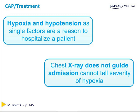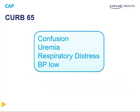Any combination of these criteria should result in hospitalization. However, if hypoxia or hypotension are present, even as single factors, they are enough to admit the patient. Remember, the chest x-ray does not guide admission because it cannot tell the severity of hypoxia. Another tool you can use is the CURB65 rule: C for confusion, U for uremia, R for respiratory distress, B for BP low, and 65 for age 65. If the patient has any one of those four criteria, or has an age of 65 or greater, they should be admitted for management of community-acquired pneumonia.